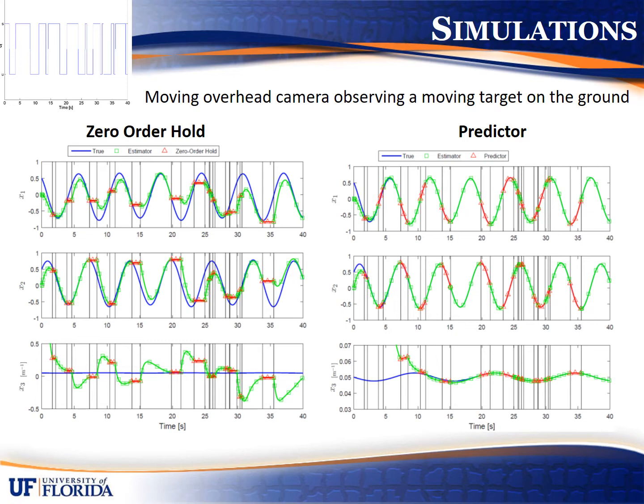Instead of using a motion model, one could use a simple zero-order hold when the target is not visible. We've shown theoretical bounds for a zero-order hold and demonstrated in experiments that for some frequency of intermittency it works. However, a motion model-based prediction method can extend the amount of time the target can be occluded, improving robustness. In this simulation using the same intermittency profile, the estimator with prediction converges — the red line representing predictor use and the green line denoting image feedback overlap with the blue ground truth perfectly — versus the zero-order hold plot, which shows no convergence, as the green lines try to converge but are disrupted too quickly.